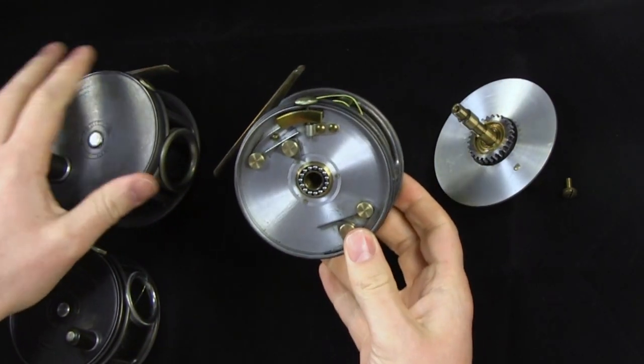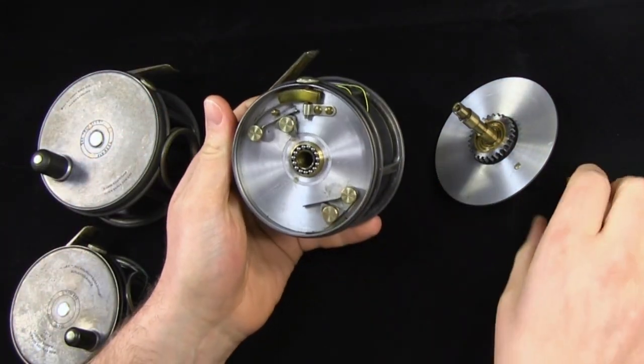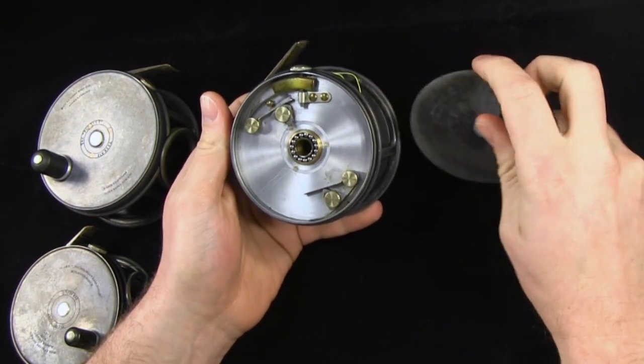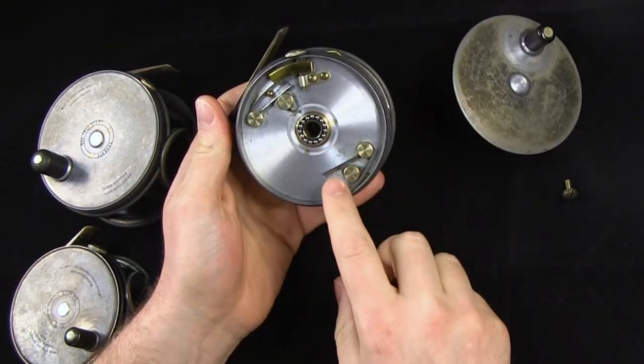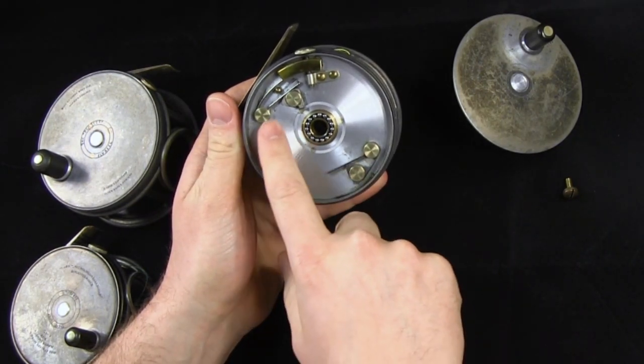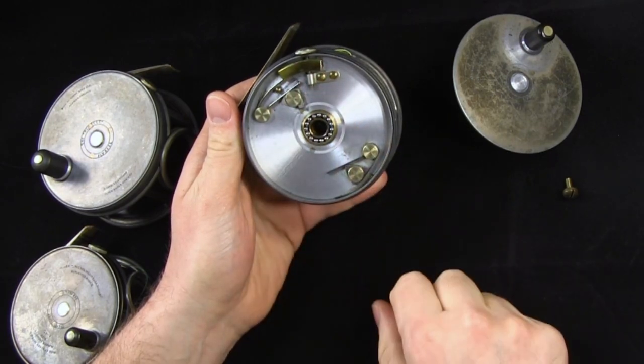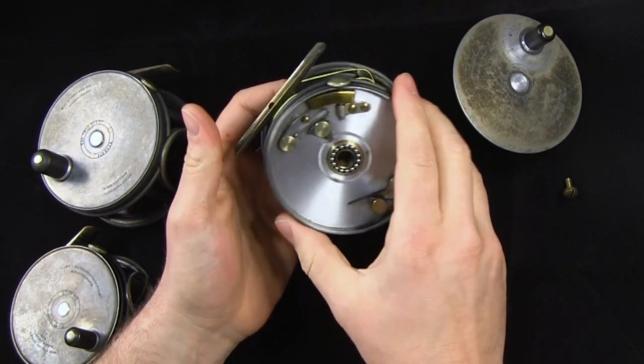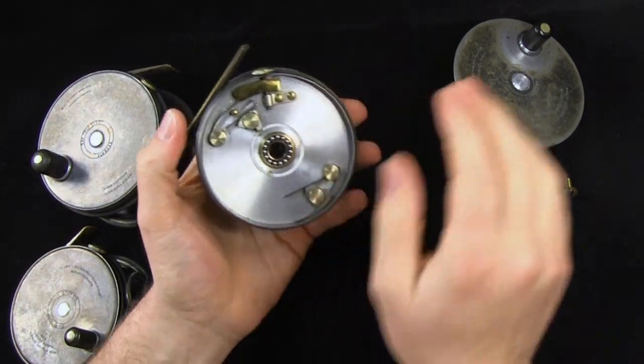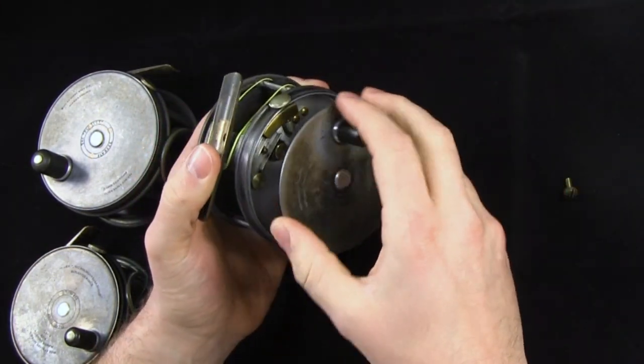Again, you can see a very similar system. This is the duplicated Mark II check as well. Very similar to what we saw on that three and a half. The spare does not engage, same type of pawl structure, same type of check mechanism, bearing race. Very similar reels. This one's a little bit older that doesn't have the date written on it.